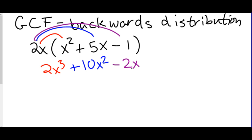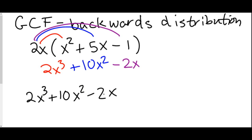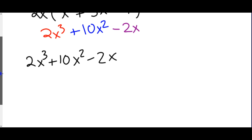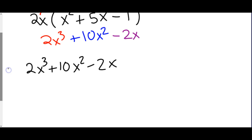So greatest common factor is doing this process backwards. It's actually a form of division, just like distribution is a form of multiplication. So when we are doing greatest common factor, it's saying 2x³ + 10x² - 2x — take it back to a distribution problem, give it some parentheses. When we do greatest common factor, we think to ourselves: what divides into each term?